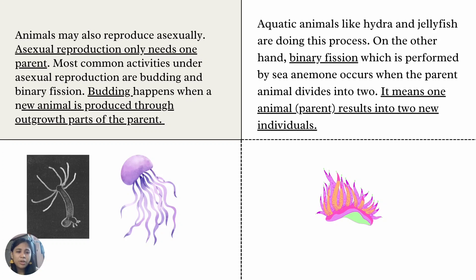Animals may also reproduce asexually. Asexual reproduction only needs one parent. The most common types of asexual reproduction are budding and binary fission. Budding happens when a new animal is produced through outer parts of the parent; aquatic animals like hydra and jellyfish carry out this process. Binary fission occurs when a parent animal divides into two, meaning one parent results in two new individuals.